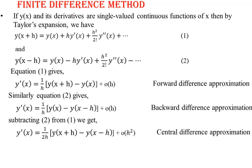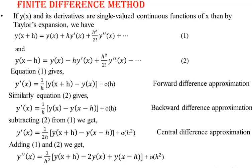So in three ways we get the first derivative approximation, and we generally use the central difference approximation. By adding equations 1 and 2, we get the second derivative y''(x) = (1/h²)[y(x+h) − 2y(x) + y(x−h)] plus higher-order terms. Neglecting the higher-order terms, this is also called the central difference approximation for the second derivative.